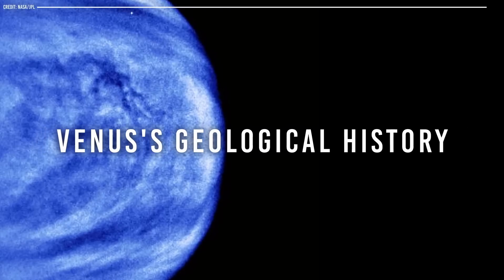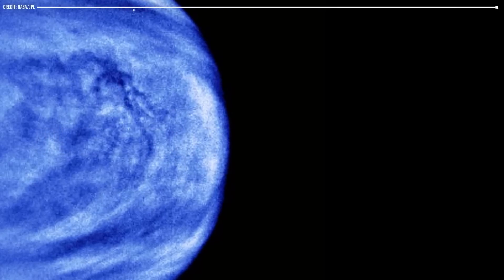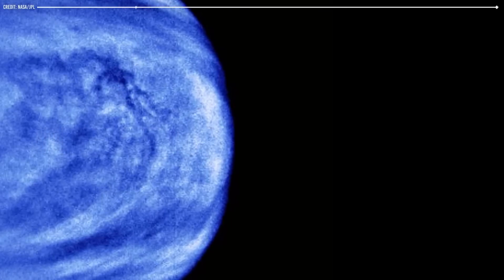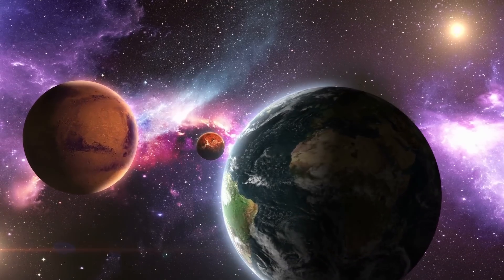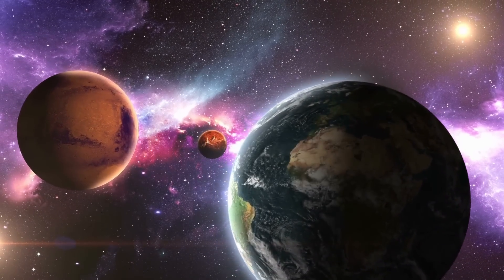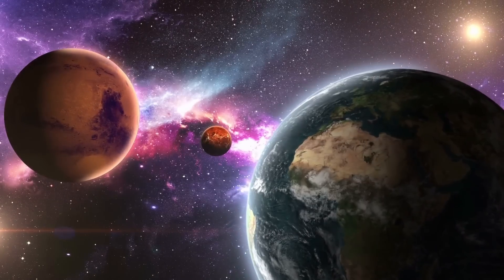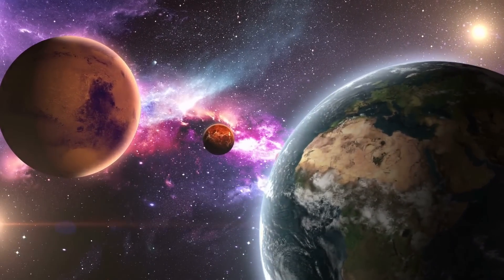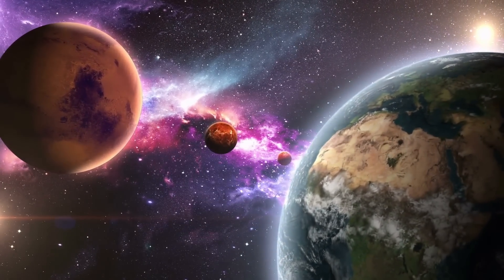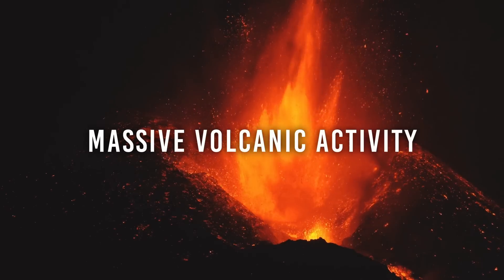Venus's geological history has also played a role in its transformation into a hellish environment. Venus has a very slow rotation, which means that a single day on Venus is longer than a year on the planet. This slow rotation combined with the intense heat has caused the planet's surface to undergo massive volcanic activity.